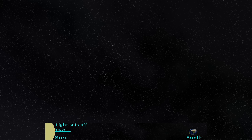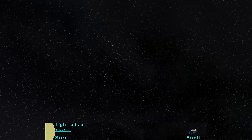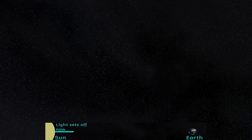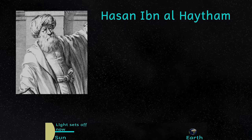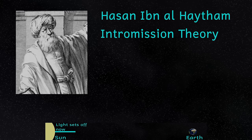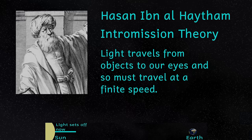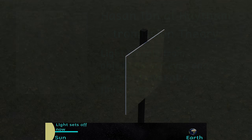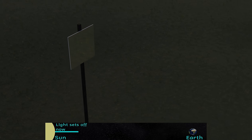Unfortunately, ancient Greek science was more of a deductive process, so rather than testing ideas, they thought that knowledge came from pure reasoning. In the 11th century the Mesopotamian physicist Hassan ibn al-Haytham proposed a different idea called the intramission theory, in which he proposed that light moves from an object to our eyes and must therefore travel at a finite speed. It wasn't until the 17th century that we get the first attempts at the measurement of the speed of light.